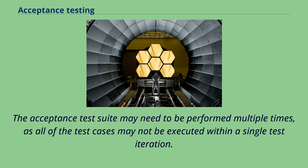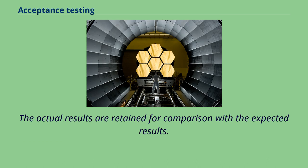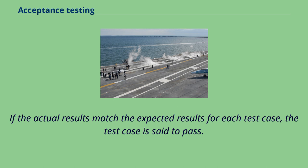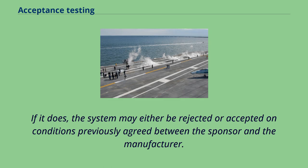The acceptance test suite is run using predefined acceptance test procedures to direct the testers which data to use, the step-by-step processes to follow, and the expected result following execution. The actual results are retained for comparison with the expected results. If the actual results match the expected results for each test case, the test case is said to pass. If the quantity of non-passing test cases does not breach the project's predetermined threshold, the test suite is said to pass. If it does, the system may either be rejected or accepted on conditions previously agreed between the sponsor and the manufacturer.